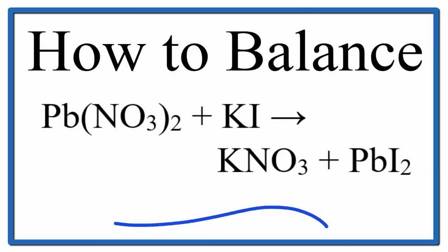To balance this equation, lead 2 nitrate plus potassium iodide yields potassium nitrate plus lead 2 iodide. Let's count up the atoms on both sides of the equation.